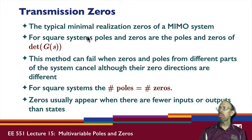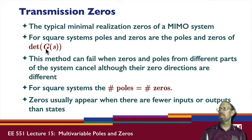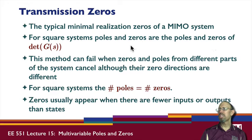In general, the transmission zeros are the typical minimum realization zeros of a multi-input, multi-output system. For square systems, poles and zeros are the poles and zeros of the determinant of G of S. The poles of the system are the roots of the determinant of G of S.